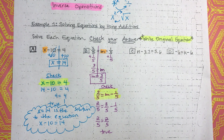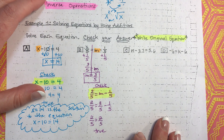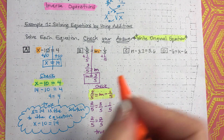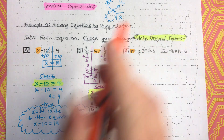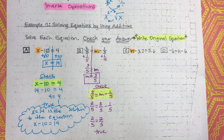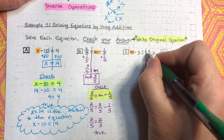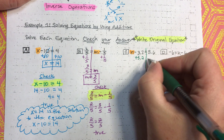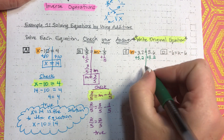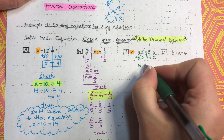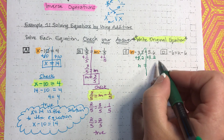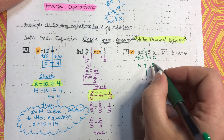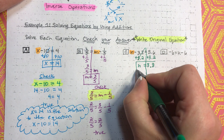Let's move on to the next example. We have n minus 3.2 equals 5.6. Again, we want to isolate that variable. n is not by itself — there's a negative 3.2. So, we need to add 3.2 to both sides. The inverse operation of subtraction is addition. This is going to cancel; we'll be left with n equals. Then we do the addition: 6 plus 2 is 8, bring down the decimal, 3 plus 5 is 8. So, n equals 8.8 — there's our solution.